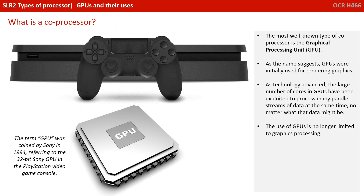The most well-known type of coprocessor is the GPU, or graphical processing unit. As the name suggests, GPUs were initially used for rendering graphics.